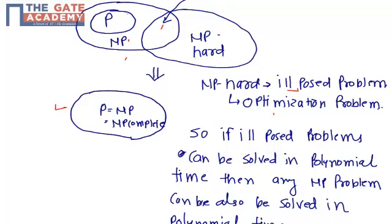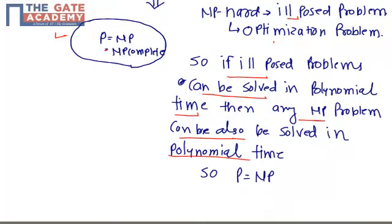If there is a polynomial algorithm for NP-hard problems, then there is no separate space for them in the diagram. All NP-hard problems become part of NP-complete, so NP-complete equals NP. Since any NP problem can be polynomially reducible to an NP-complete problem, and if ill-posed problems can be solved in polynomial time, then any NP problem can also be solved in polynomial time.